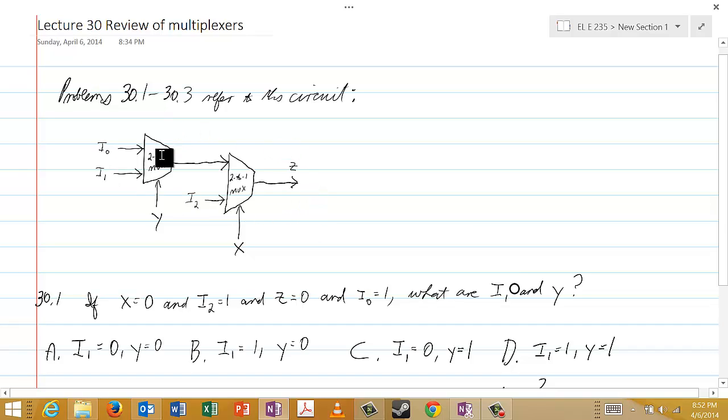So we have two 2 to 1 multiplexers. I0 and I1 are the inputs to the first multiplexer, and Y is for the select line. And the inputs to the second multiplexer are the output of the first multiplexer and I2. And X is on the select line for this multiplexer. The output of this multiplexer is Z.